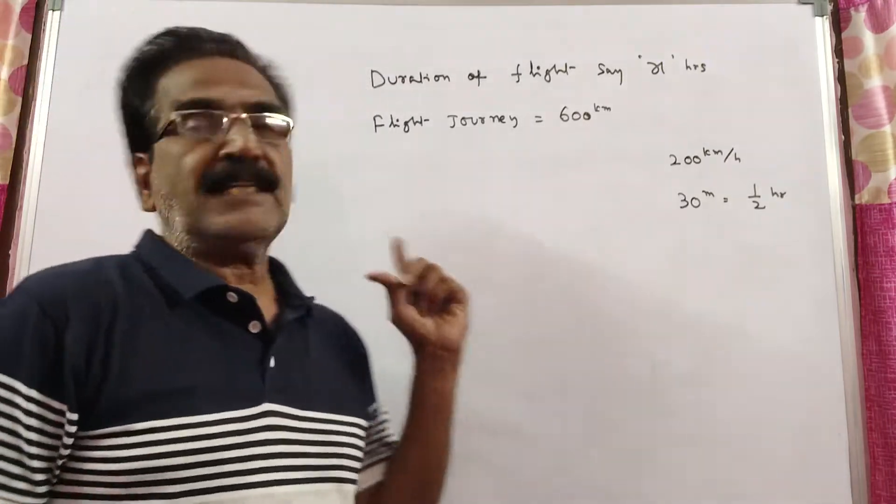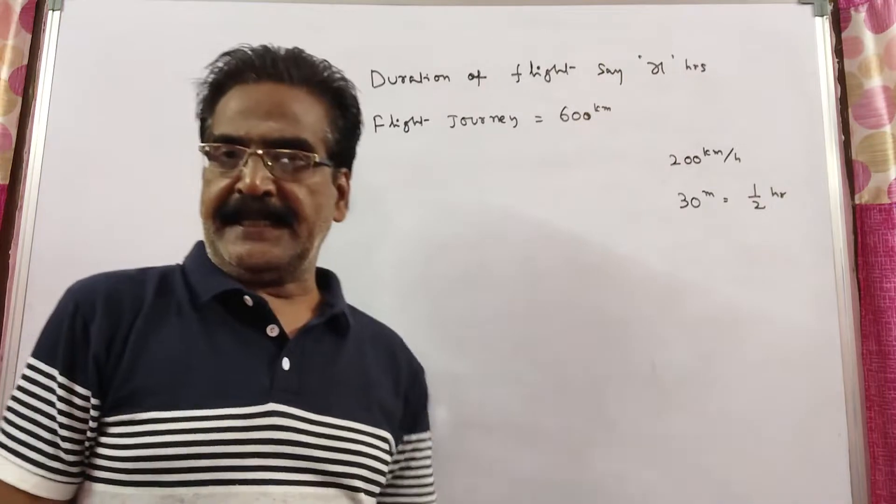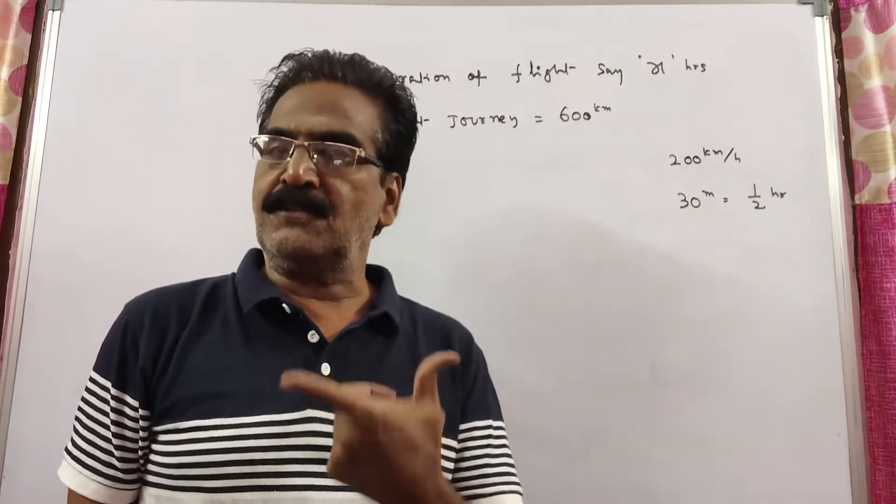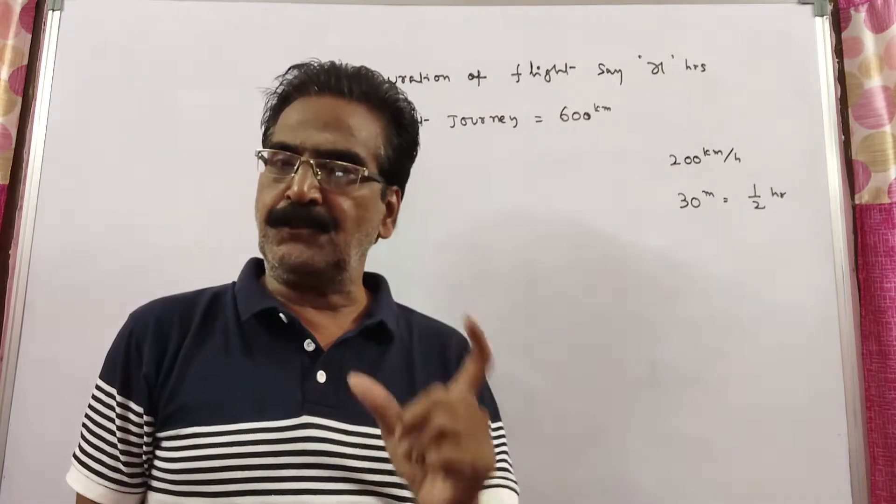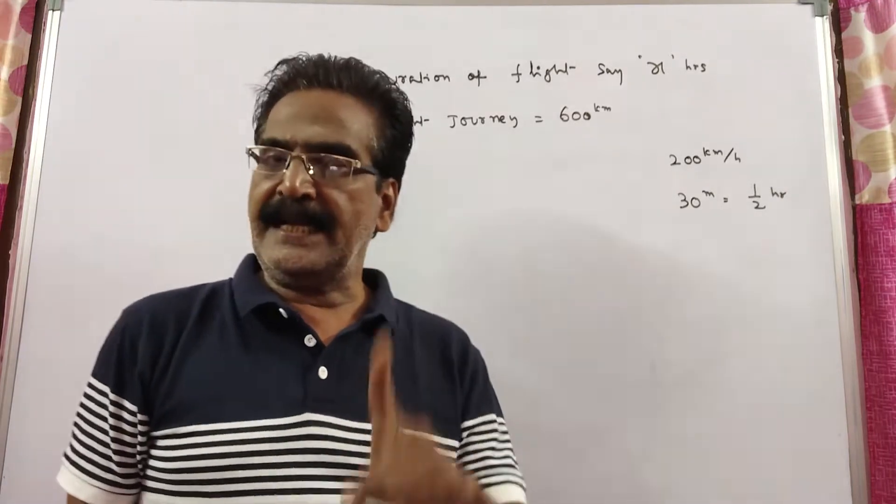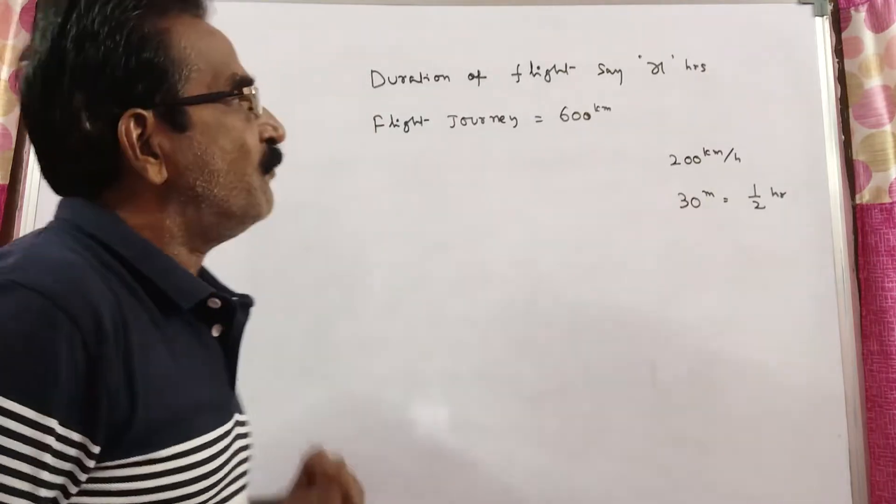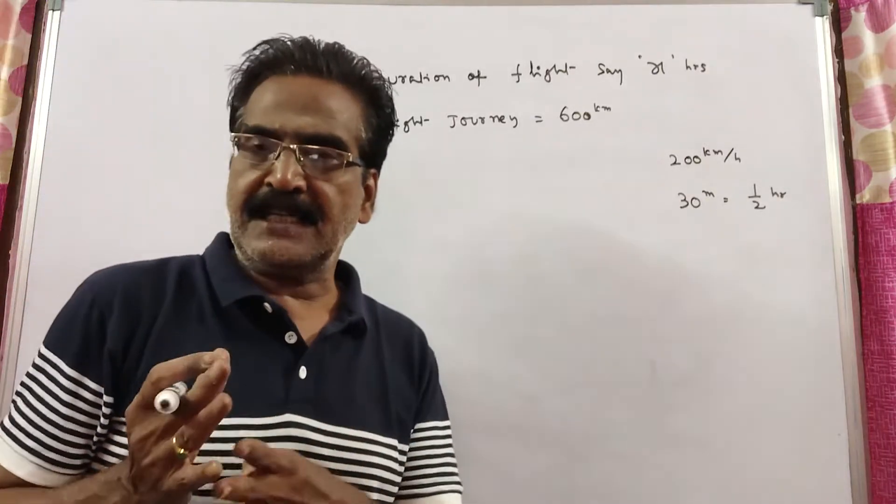In a flight of 600 km, the speed of the flight was reduced by 200 kmph due to bad weather, and hence it took 30 minutes more. So what is the actual duration of the flight?